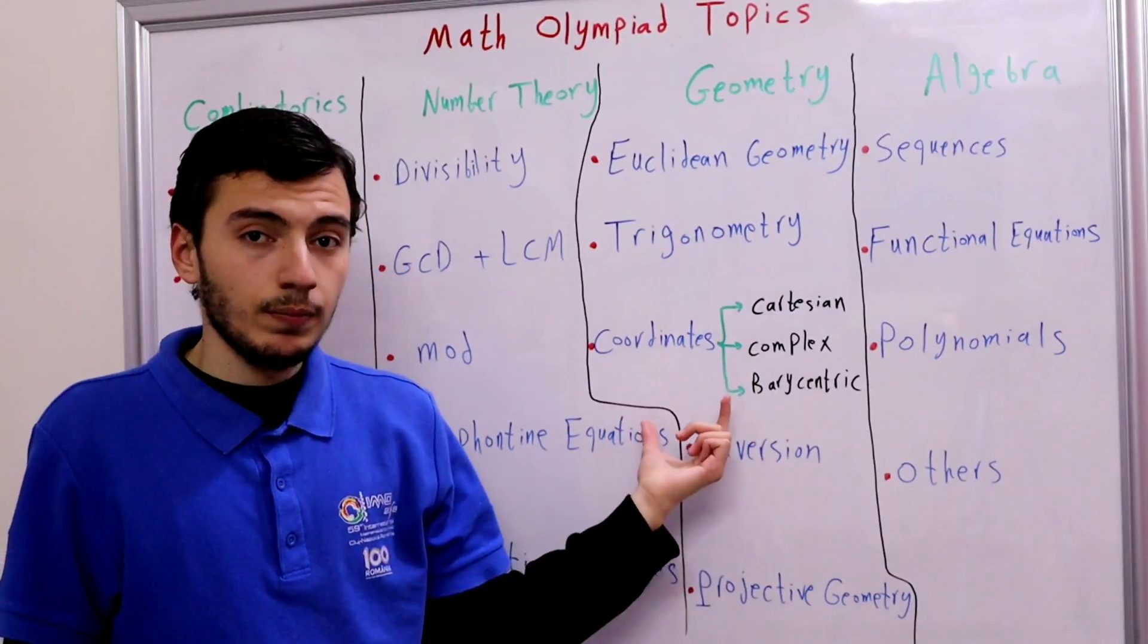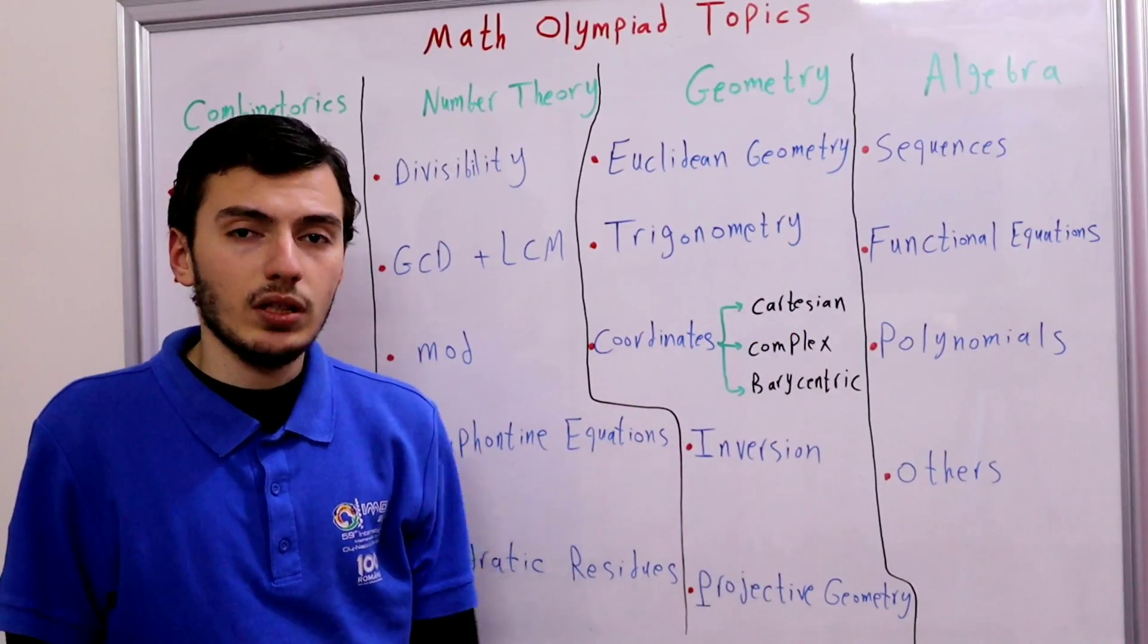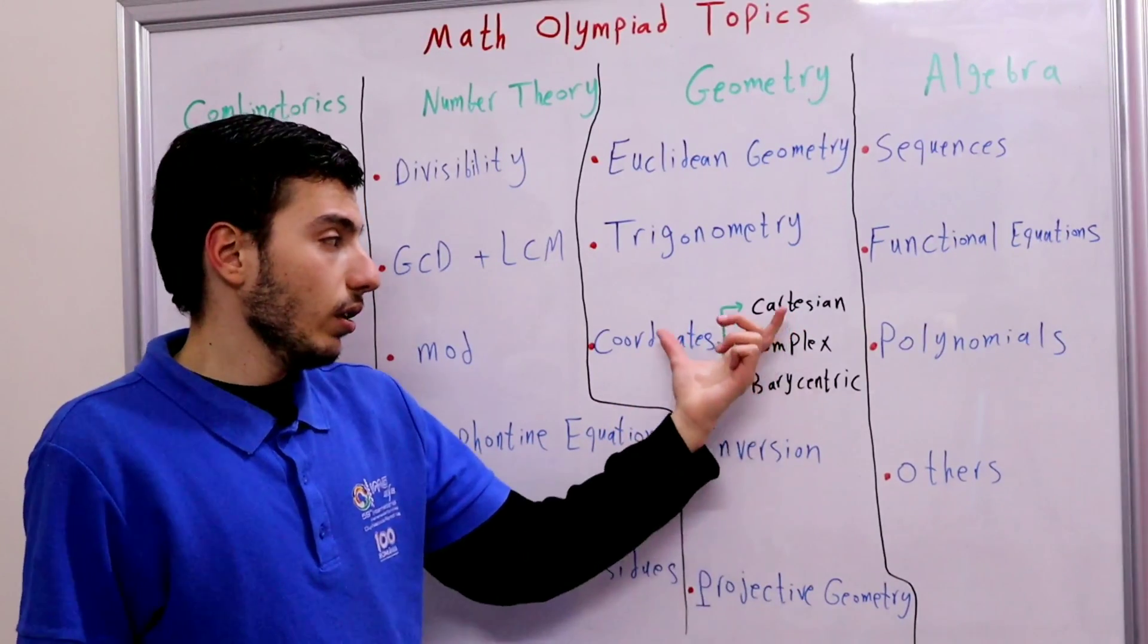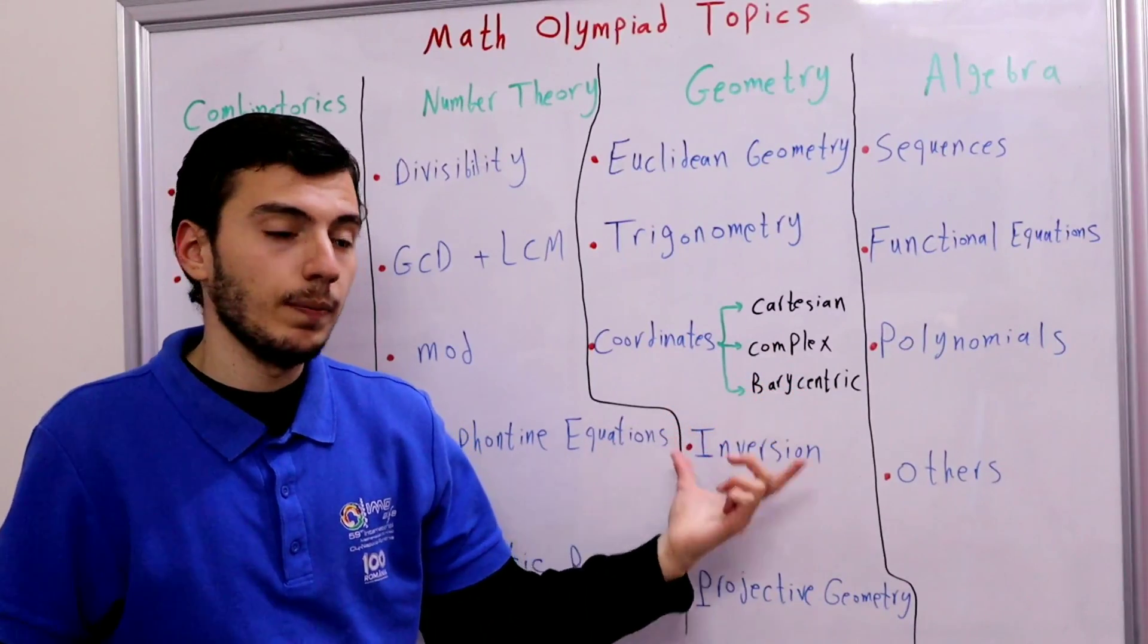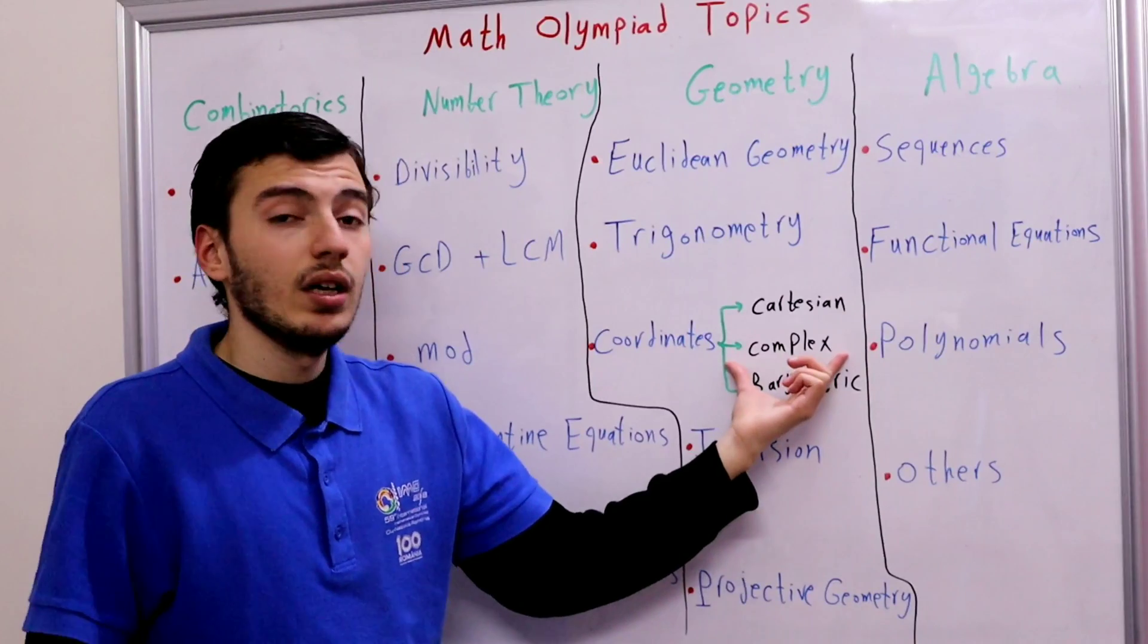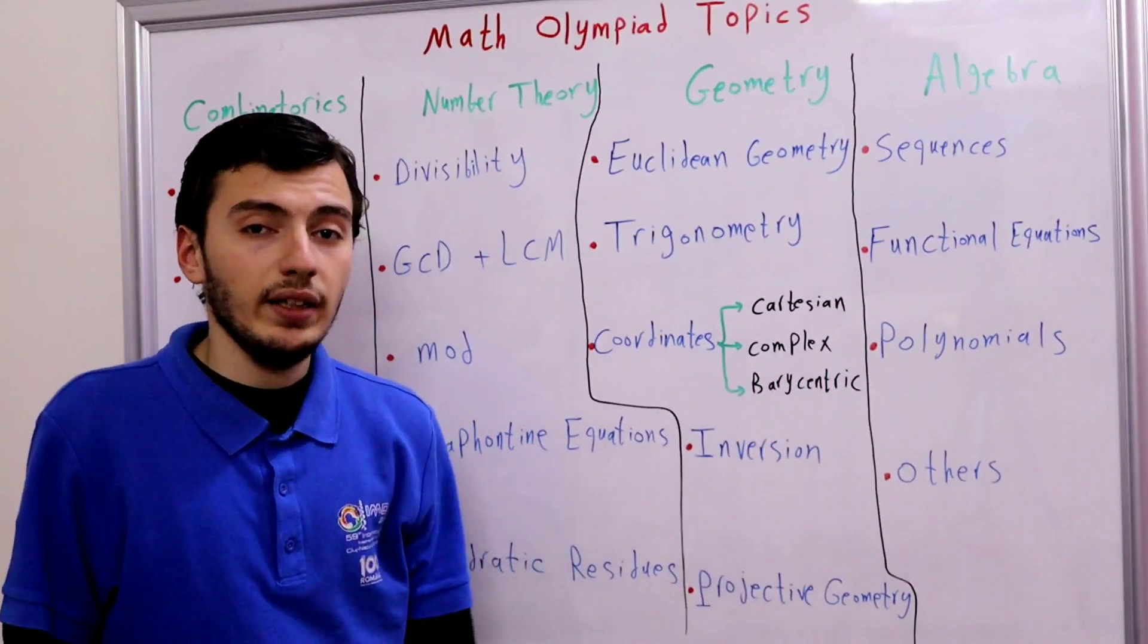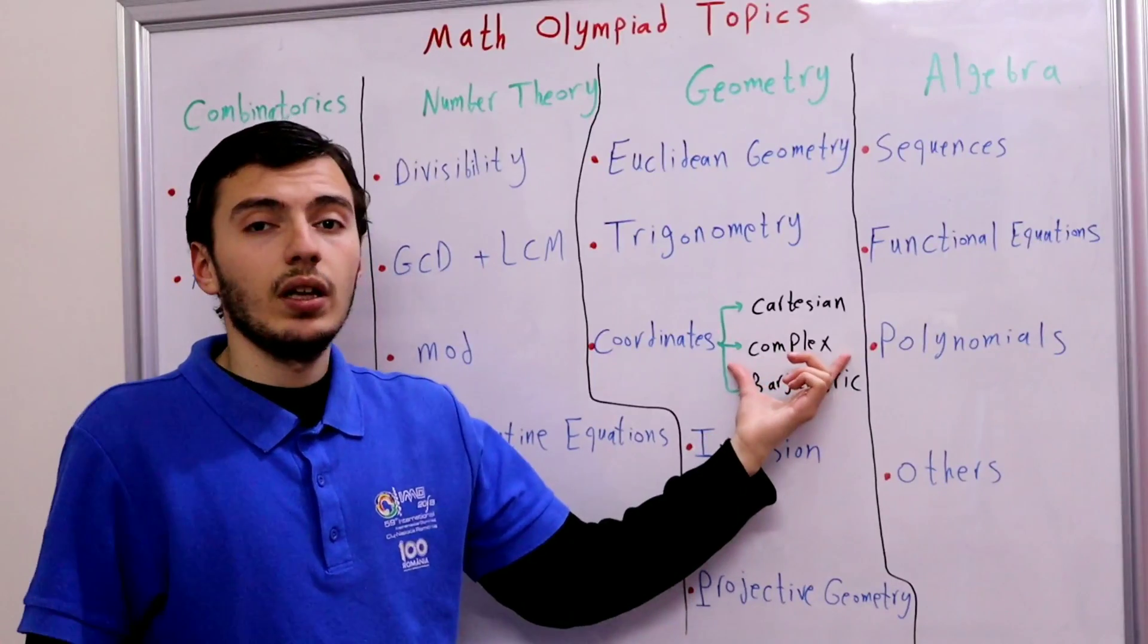So that's for trigonometry. What about coordinates? I'm pretty sure that you know Cartesian coordinates very well. But unfortunately it's really less famous in Math Olympiad contests. The more famous coordinates is complex numbers or complex coordinates and it's really useful because it solves lots of IMO problems.